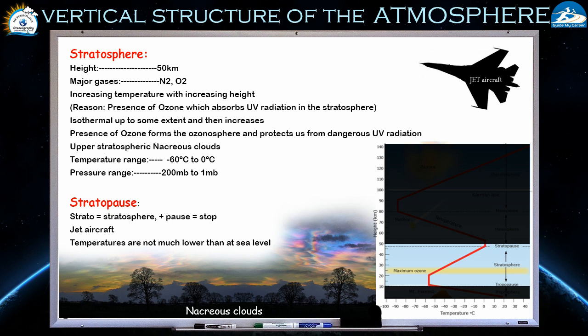You can also see some clouds in the stratosphere — those are called upper stratospheric nacreous clouds, visible at the bottom of the slide in different colors. The temperature range of this layer is minus 60 degrees to zero degrees, indicating a rise from negative to positive. The pressure range is 200 mb to 1 mb.